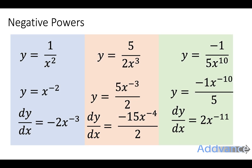So there you go — those are the steps on screen for you. If you wanted to, at the end you could also simplify these by making the negative power into a fraction. So this one would be minus 2 over x to the power 3. You may want to pause the video now and see if you can follow those steps yourself on pen and paper, step by step.